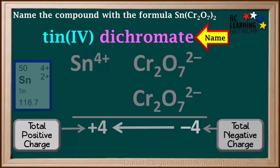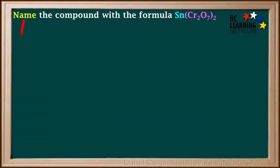So the final name is tin IV dichromate. So the final answer to the question is, the name of this compound is tin IV dichromate.